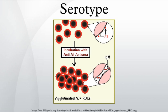Serotyping often plays an essential role in determining species and subspecies. The Salmonella genus of bacteria, for example, has been determined to have over 2600 serotypes, including Salmonella enterica serovar Typhimurium, S. enterica serovar Typhi, and S. enterica serovar Dublin.